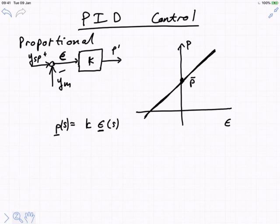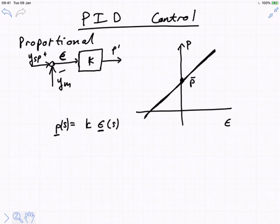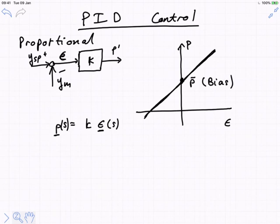How is it that we have this P-bar? It's because the controller is taking action in the real world. While we do our calculations in deviation variables, we want to actually apply that in the real world, which means we have to add back that steady-state value. This is also known as the bias of the controller.